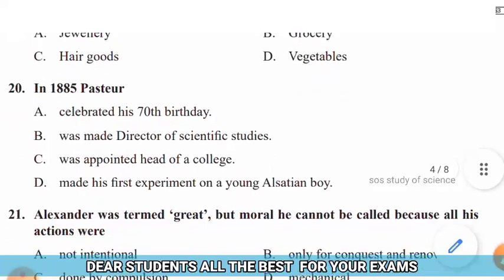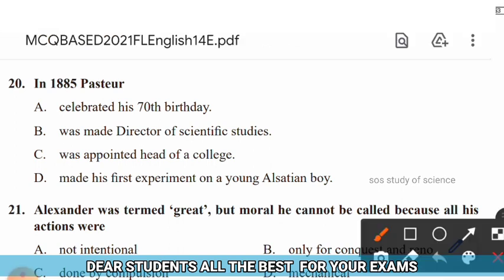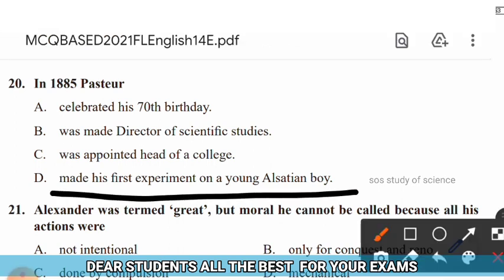Question 20: In 1885, Pasteur — options: (A) celebrated his 70th birthday, (B) was made director of scientific studies, (C) was appointed head of a college, (D) made his first experiment on a young Alsatian boy. The right answer is option D — in 1885, Pasteur made his first experiment on a young Alsatian boy.